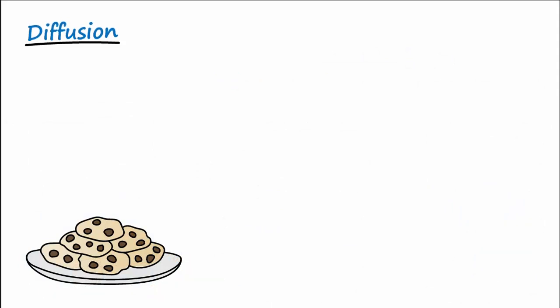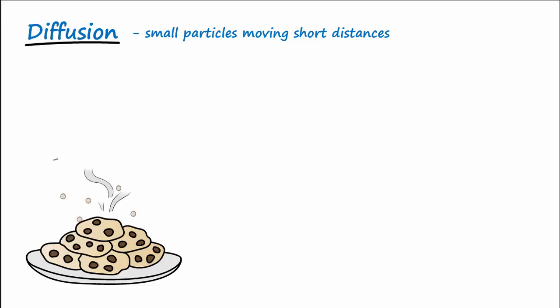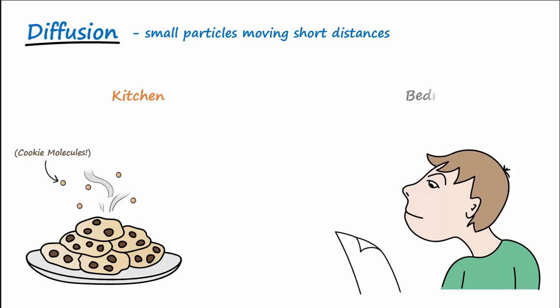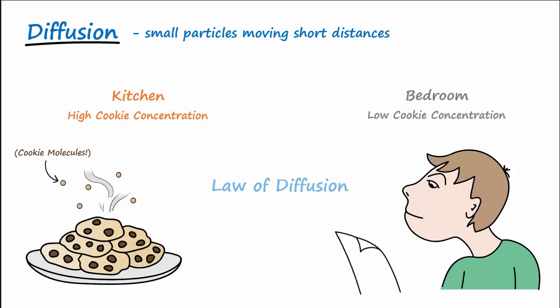When we speak of diffusion, we are talking about small particles moving short distances. But here's a larger scale analogy that may help you understand diffusion. Your wonderfully awesome roommate is baking cookies in the kitchen. You are diligently studying for your upcoming physiology exam in the back bedroom of your apartment. Where are the cookies in highest concentration? In the kitchen, of course. Where are they low in concentration? In the bedroom. So ignoring air currents, the law of diffusion says that the cookie molecules will go from high to low and diffuse from the kitchen into the bedroom.